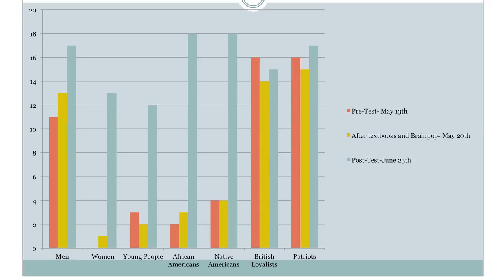The results showed that the students' knowledge about who was in the American Revolution had developed. By the end, the students understood that women, young people, African Americans, and Native Americans were all involved. The red represents the results from the pretest on May 13th, the yellow is after they read their textbooks and BrainPop on May 20th, and the post-test took place after reading all the children's literature and presenting to the class on June 25th.